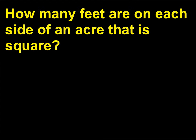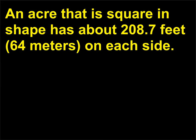How many feet are on each side of an acre that is square? An acre that is square in shape has about 208.7 feet (64 meters) on each side.